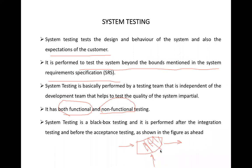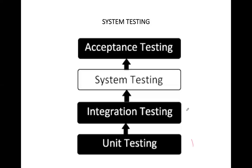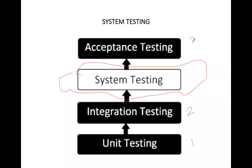Talking about the process: first we perform unit testing, then after unit testing comes integration testing, and the output of integration testing is taken into system testing. The output of system testing is then used as input to acceptance testing. So this is basically the software development testing life cycle: unit testing, integration testing, system testing, and then acceptance testing.